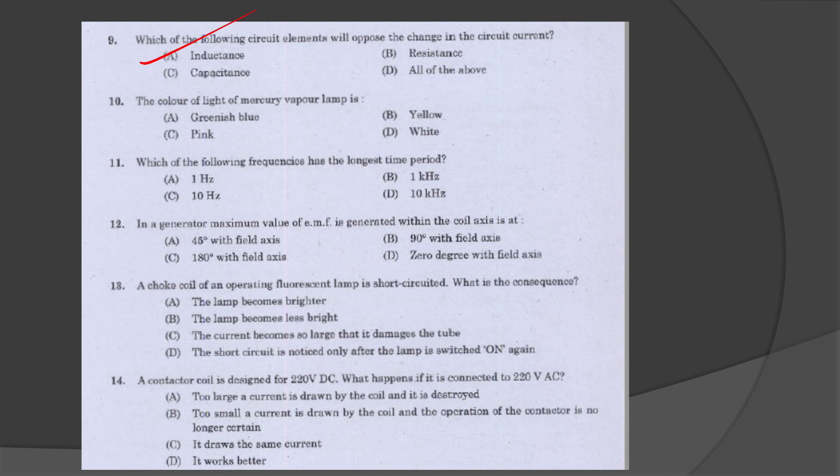The color of light of mercury vapor lamp. This is greenish blue. Which frequency has the longest time period? The longest time period is 1 Hz.